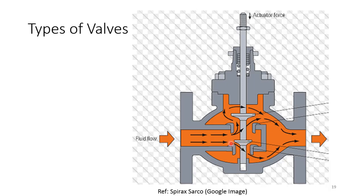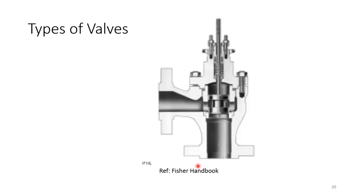Angle valves, from the Fisher Handbook: the fluid comes from the bottom — this is the upstream side. This valve is used when there is very high velocity or high noise. The fluid enters from the bottom and takes a 90-degree turn; when the fluid takes this 90-degree turn, it dissipates much higher energy within the valve itself, resulting in much lesser velocity on the downstream side.